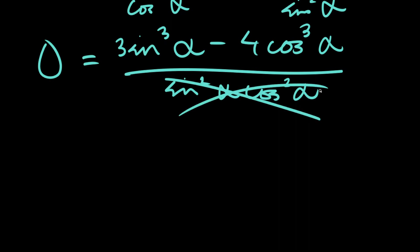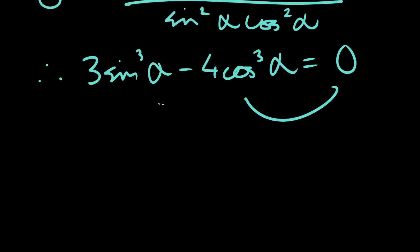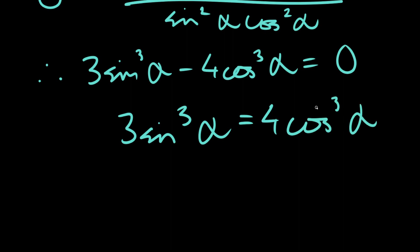Does it matter what the denominator is when the answer is zero? No, it only matters what the numerator is. So, we're just going to let 3 sine cubed alpha minus 4 cosine cubed alpha equals zero. This is a pretty specific trick I learned during the trig units. Now, I'm going to divide both sides by cosine cubed alpha, so I can get everything in terms of one trig function. Dividing both sides by cosine cubed alpha, we'll get 3 tan cubed alpha is equal to 4.